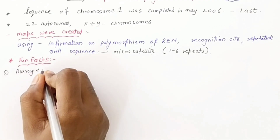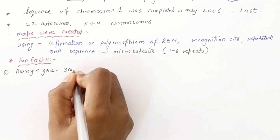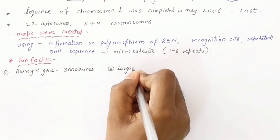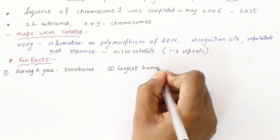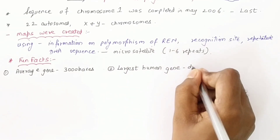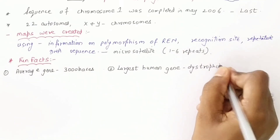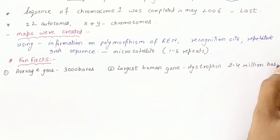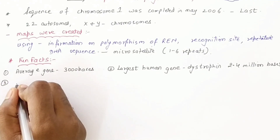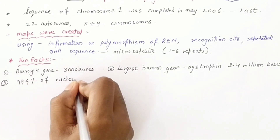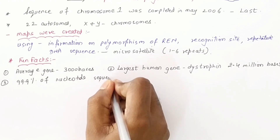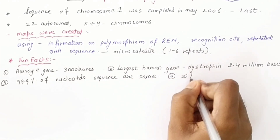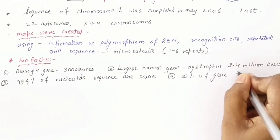Key findings: the average gene has a minimum of 3000 bases. The largest human gene is dystrophin, with 2.4 million bases. Importantly, 99.9 percent of the nucleotide sequence is the same across humans — there is only 0.1 percent difference, which we call VNTR.